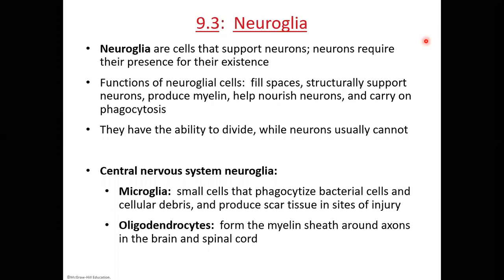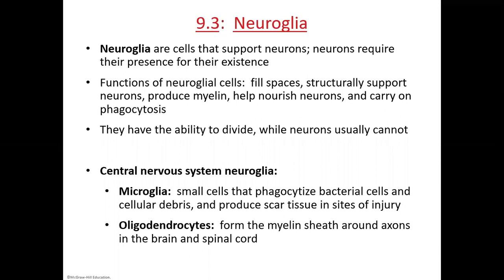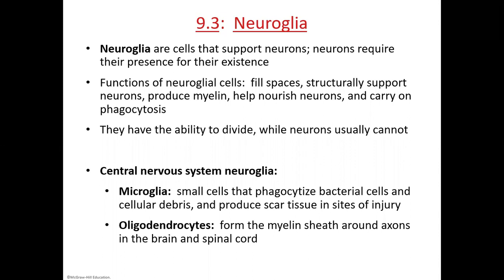In the central nervous system, we find the most diverse neuroglia. The first type is microglia — tiny cells that perform phagocytosis, eating bacterial cells and cellular debris like worn-out proteins or degraded neurotransmitters. They're like the garbage collectors of the brain. They can also produce scar tissue after injuries, such as a concussion or more severe trauma.